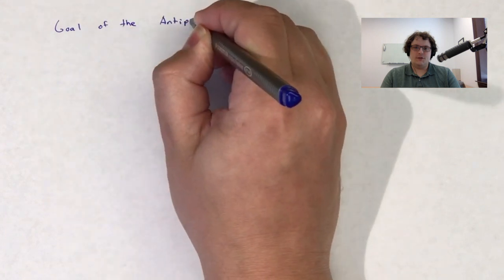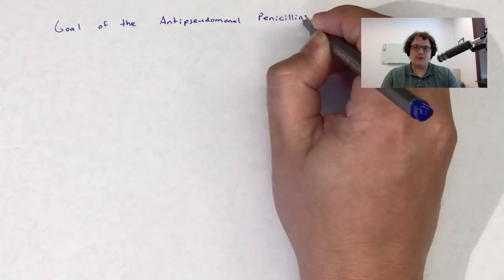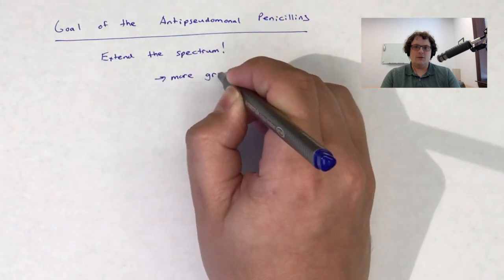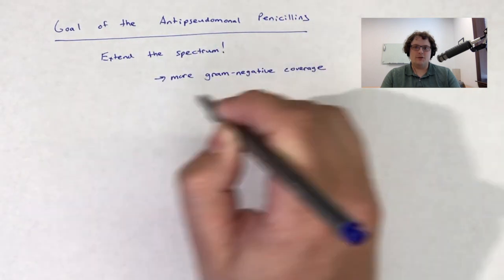The anti-pseudomonal penicillins were created to extend the spectrum of penicillins to give more gram-negative coverage and to effectively target Pseudomonas aeruginosa.